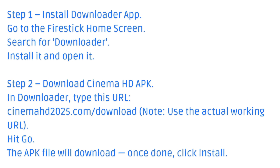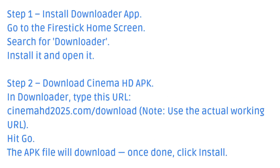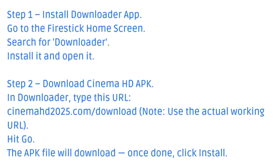Step 1: Install the Downloader app. Go to the Fire Stick home screen, search for Downloader, install it, and open it.